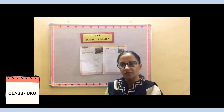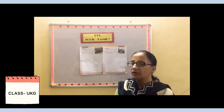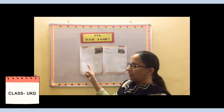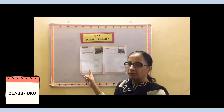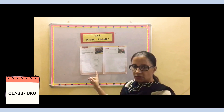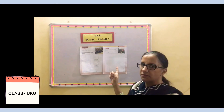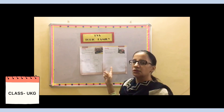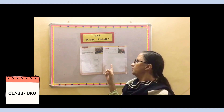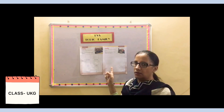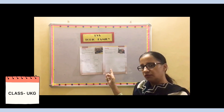Okay students, today we have learned what is family, and then you will be doing two activities in your books. एक अपने घर में जो members रहते हैं उनकी photos यहाँ पे paste करोगे, और दूसरी activity में आप अपने family members को draw करोगे और color करोगे — parents से थोड़ी सी help लेनी है. Right students? That's all for today. Bye.